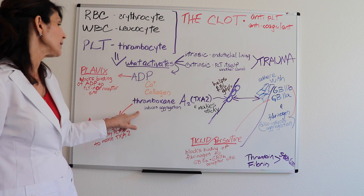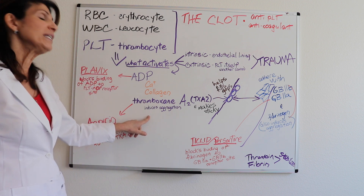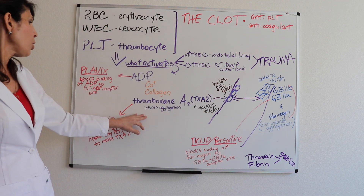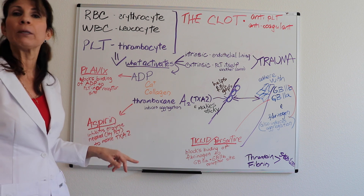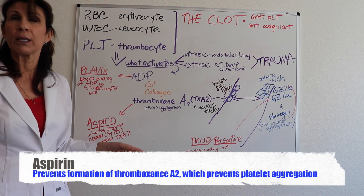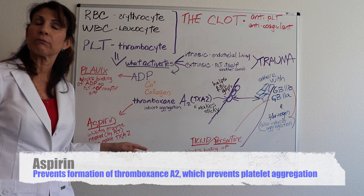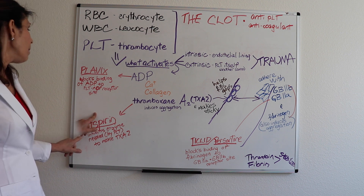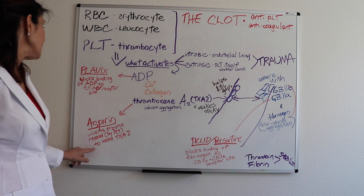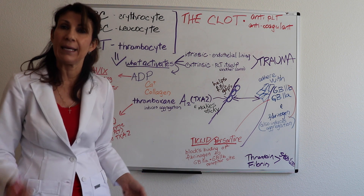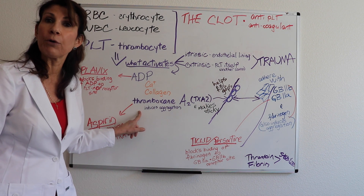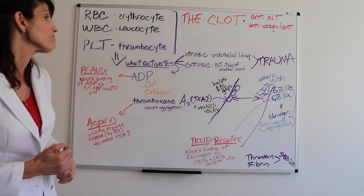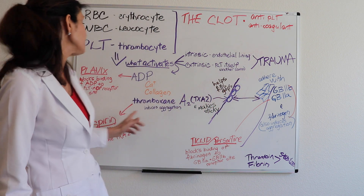Another responder when the platelet is aggregated is thromboxane 2, which makes it sticky and induces aggregation. What does aspirin do? When you administer aspirin as an antiplatelet drug, you're specifically inhibiting the enzyme needed to make thromboxane 2. If thromboxane 2 is never present, you're not going to have that aggregation or stickiness of the platelet.